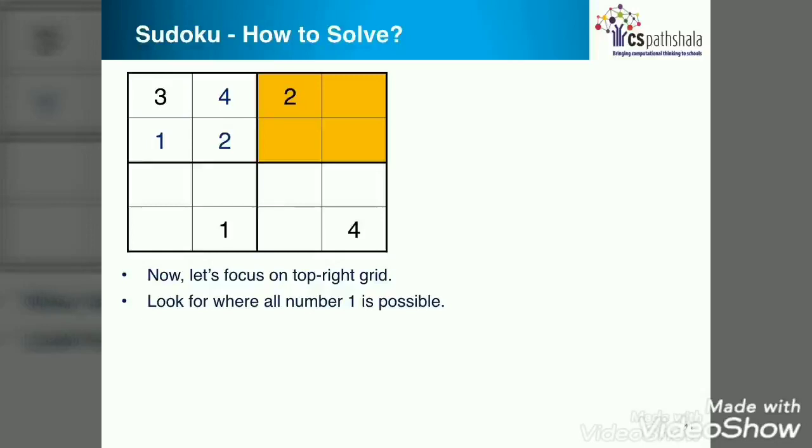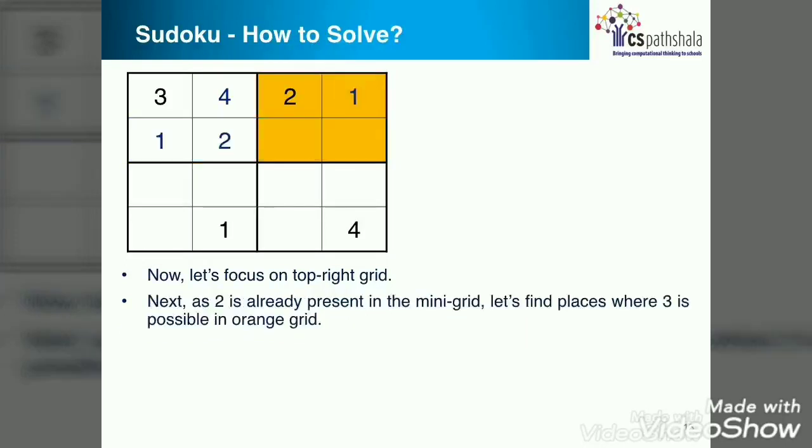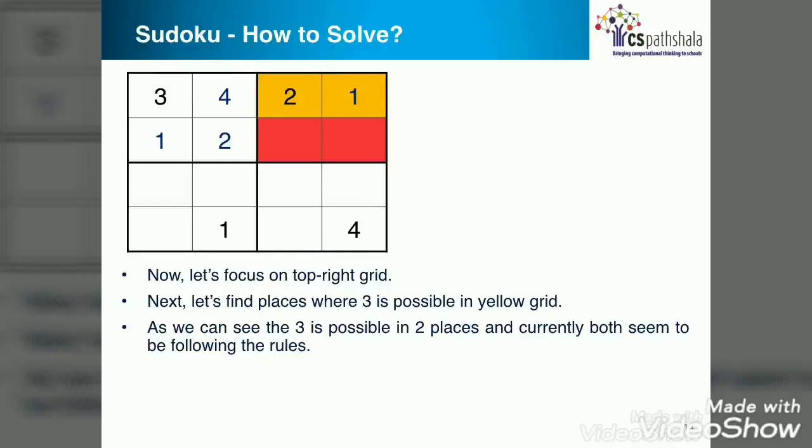Now let's take another mini grid. Should we take the one on the top right corner? 2 is already present. So what number should we try next? Take 1 and see where we can put that 1. Can you see that only one place is possible for number 1 in this grid which is shown in red. Why so? Because the 2nd row already contains number 1.